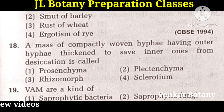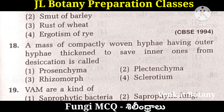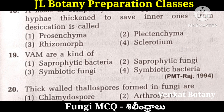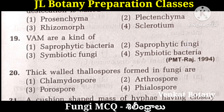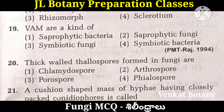A mass of compactly woven hyphae having outer hyphae thickened to save inner ones from desiccation is called Sclerotium — the fourth option. VAM are a kind of symbiotic fungi; VAM stands for Vesicular Arbuscular Mycorrhizae. Thick-walled thallospores formed in fungi are Chlamydospores.